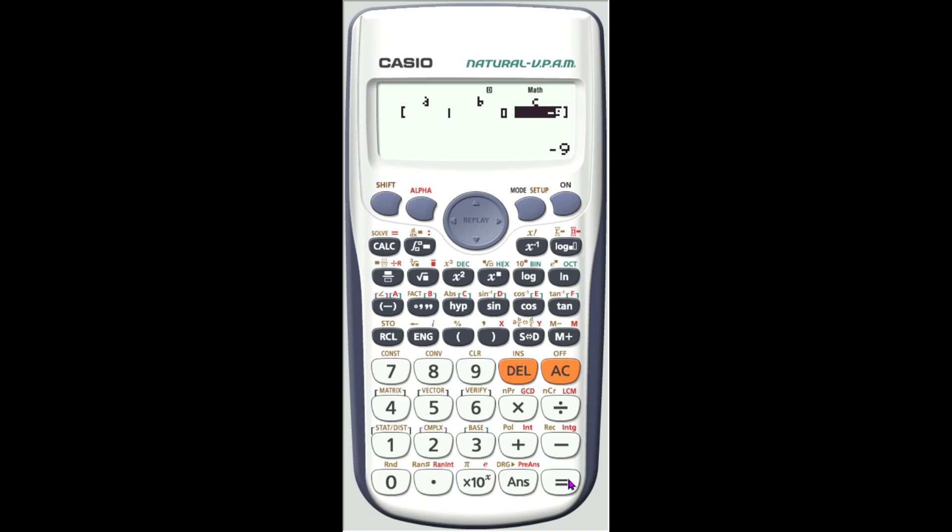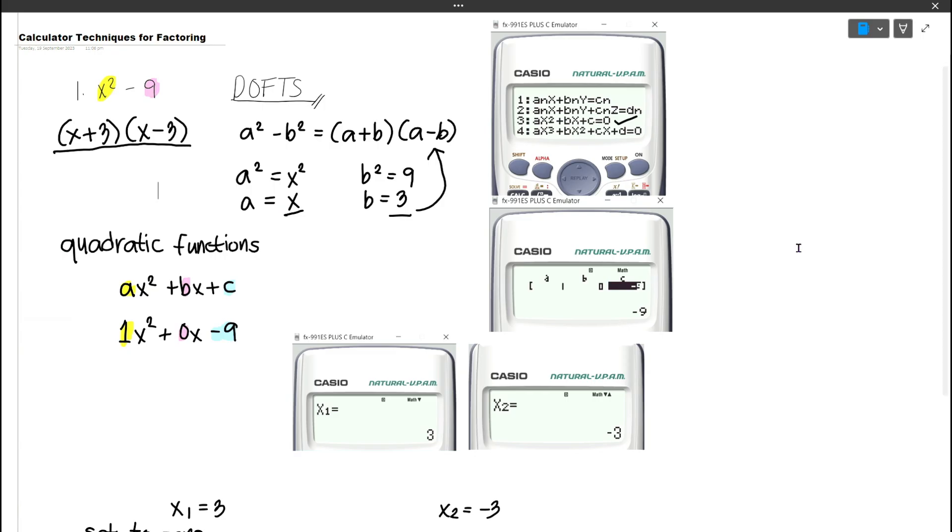Press equals and then the calculator will provide you with your x values in which x1 is 3 and your x2 is negative 3.